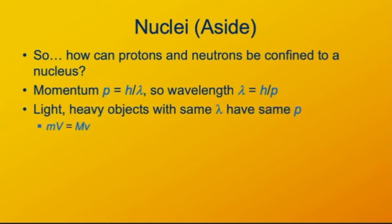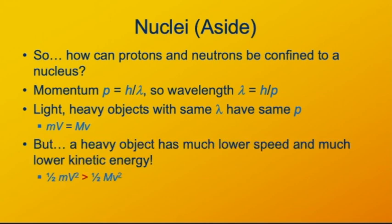If you have two objects, one light, one heavy, say an electron and a proton, and they have the same wavelength, that means they have the same momentum. So, in this case, we're showing the light object must have a small mass and a large velocity. The heavy object, to have the same momentum, has a large mass and a small velocity. However, this more massive object, with a lower velocity, has a substantially lower kinetic energy, because while momentum is directly proportional to both mass and velocity, kinetic energy is directly proportional to mass, but directly proportional to the square of velocity.